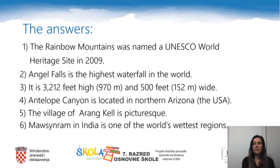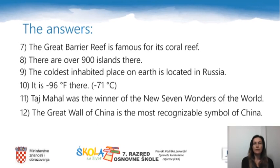The village of Arankel is picturesque. Mawsynram in India is one of the world's wettest regions. The Great Barrier Reef is famous for its coral reef. There are over 900 islands there. The coldest inhabited place on earth is located in Russia — it is minus 96 degrees Fahrenheit, or minus 71 degrees Celsius. Taj Mahal was the winner of the new Seven Wonders of the World. The Great Wall of China is the most recognizable symbol of China.